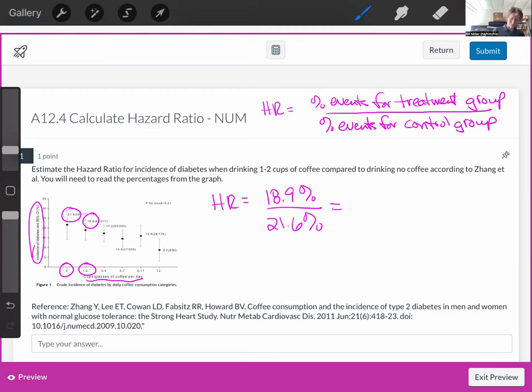Dividing these two numbers, 18.9 divided by 21.6. Yes, my hazard ratio is 0.875. We should go to three digits because we have three digits in each of our numbers that we're dividing.